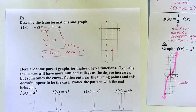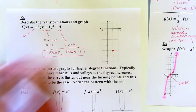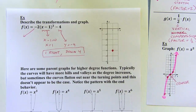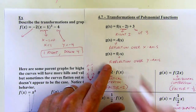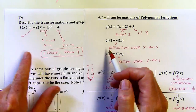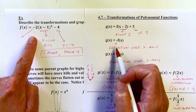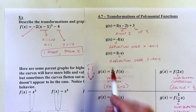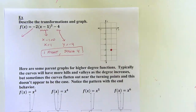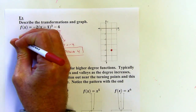I've got some other things happening here though. I've got this negative out here, which is going to give me a reflection. So going back to the beginning of the notes, we've got that negative that's outside the parentheses, so it's going to be a reflection over the x-axis.